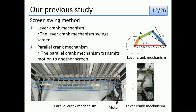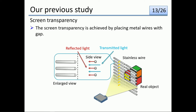The screen swinging mechanism consists of a lever crank mechanism, a parallel crank mechanism, and one motor. The screen swings using the motor and lever crank mechanism, and the swinging motion is transmitted to other screens by the parallel crank mechanism. The screen must be transparent to superimpose images on real objects, reflecting light rays from the projector while transmitting light rays from behind. This transparency is achieved by replacing metal wires with gaps, where the metal wires reflect projector light and the gaps allow light from behind the screen to pass.